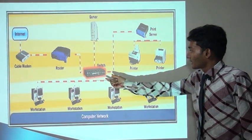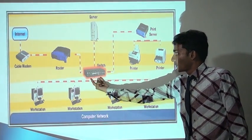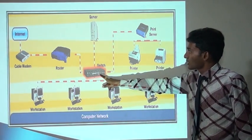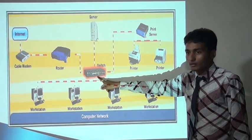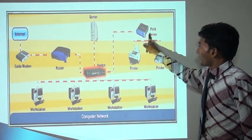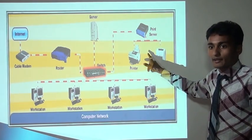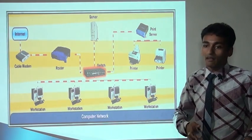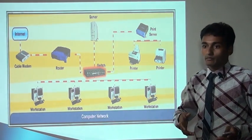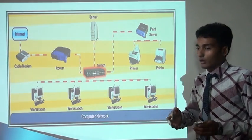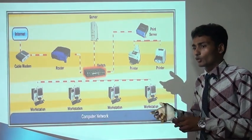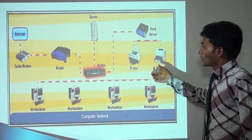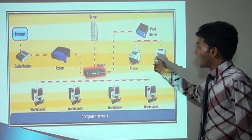In this figure, we can see that a switch is one type of networking device. Workstation computers are connected with each other through a switch. The server is also connected through a switch, and a printer is also used through the network. Suppose we have a big company with lots of users — at that time, a company does not provide a separate printer to each user, so we can use a network printer that any user or worker can access.